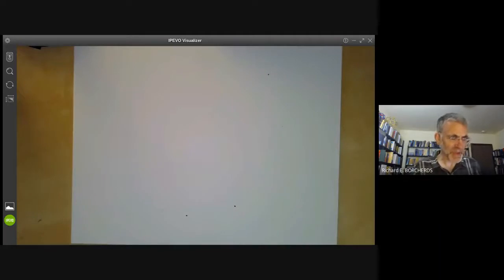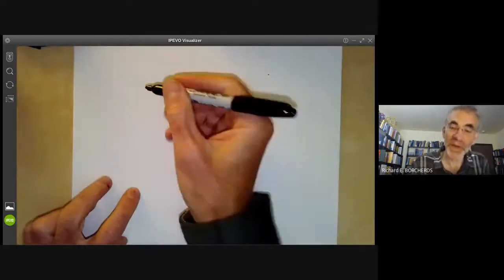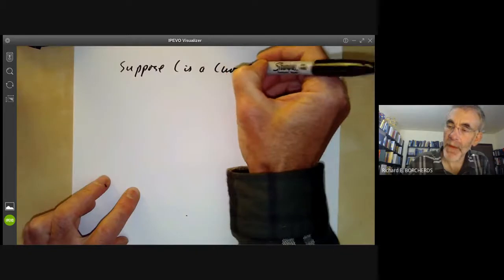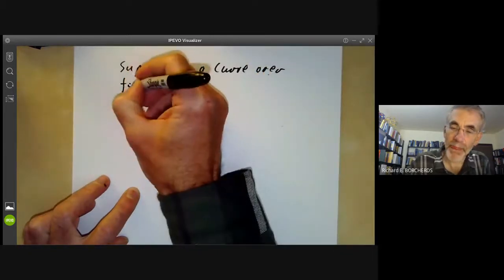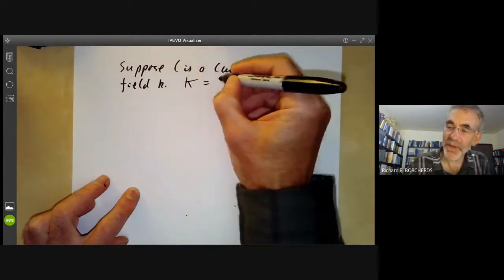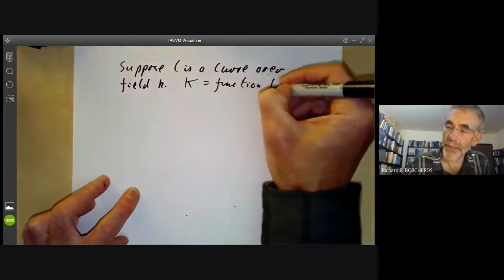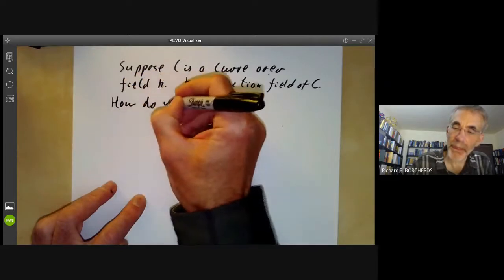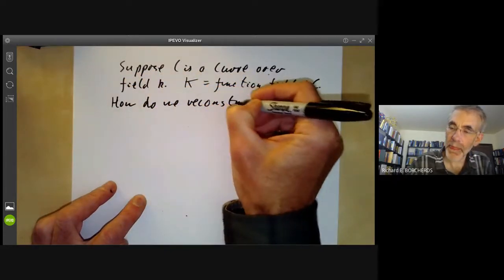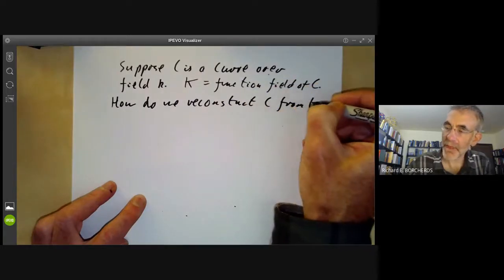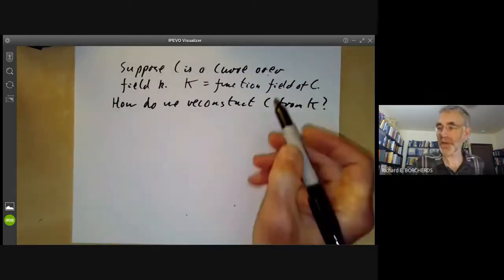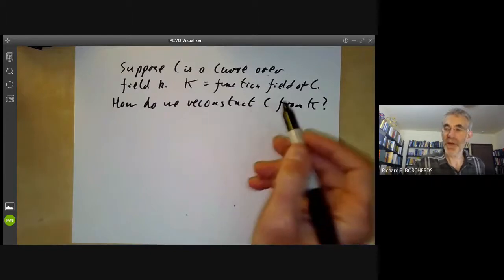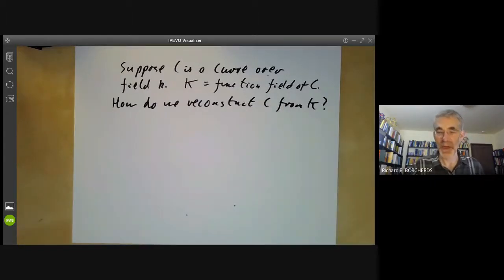And these were sometimes used by Zariski as follows. First of all, let me do the case of curves. So suppose C is a curve over a field K. Then let's put big K to be the function field of the curve. And the problem is, how do we reconstruct C from K? Well, the answer is you can't, because there are lots of different curves that have the same function field. For instance, you could remove a few points from the curve, or you could have a curve with a singularity. And this has the same function field as its resolution.